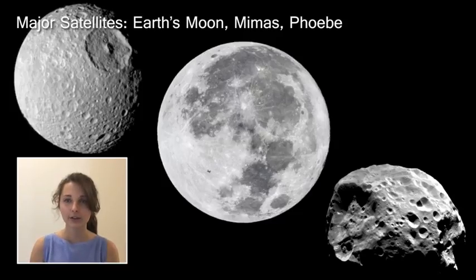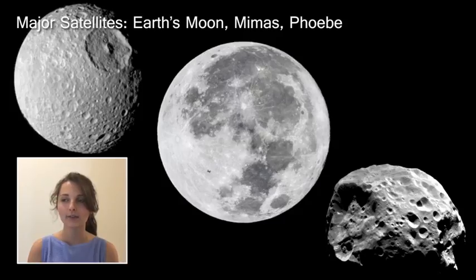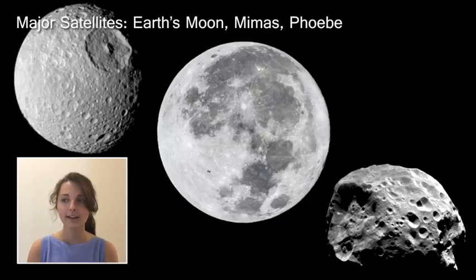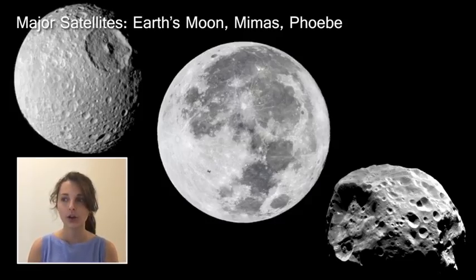The major satellites included in the 2019 Solar System event are those large rocky satellites that have developed dynamic and very different surface geologies, as well as fascinating histories of formation and evolution. The satellites included this year are Earth's Moon, Saturn's moons Mimas and Phoebe, and Pluto's moon Charon.